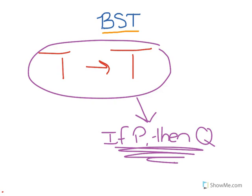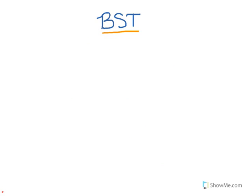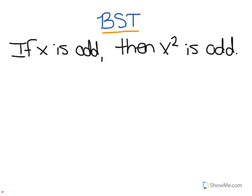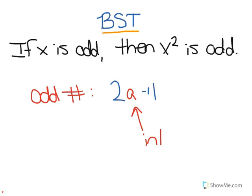So let's do an example. We're going to start with the conditional statement, if x is odd, then x squared is odd. And before we begin, let's just remind ourselves that an odd number is defined as any number that can be represented by 2a + 1, where a is an integer.